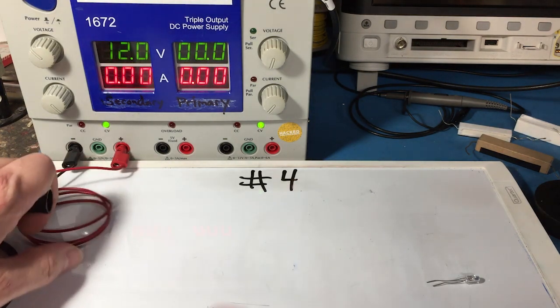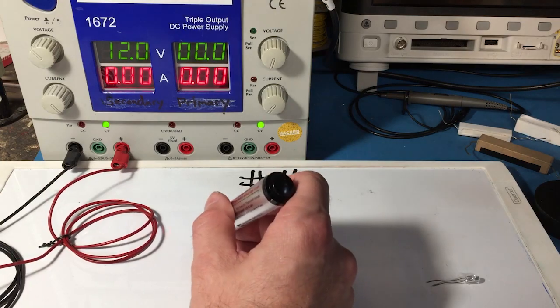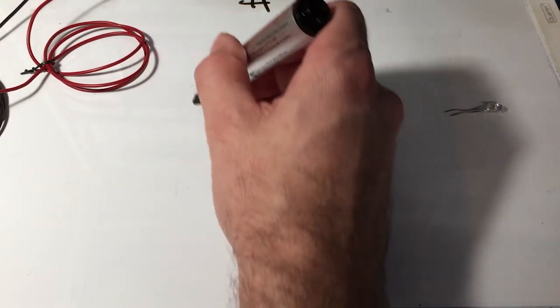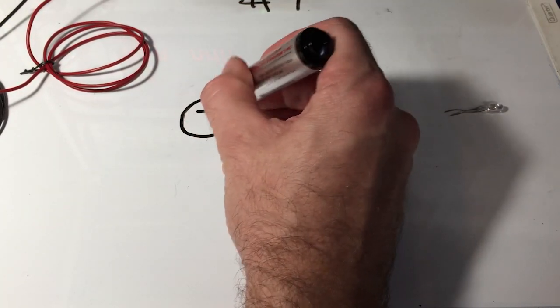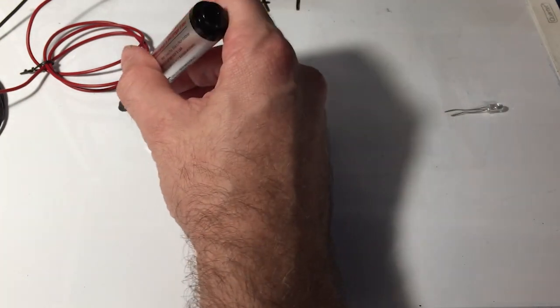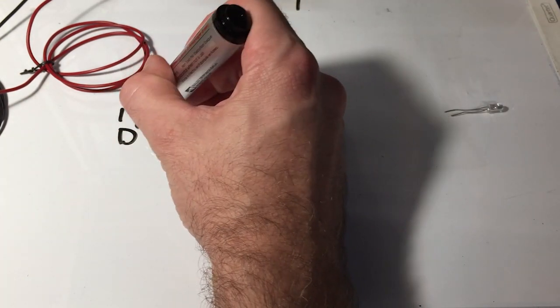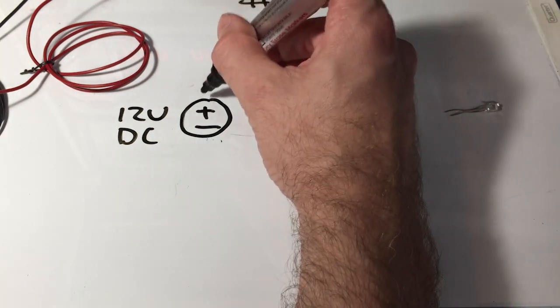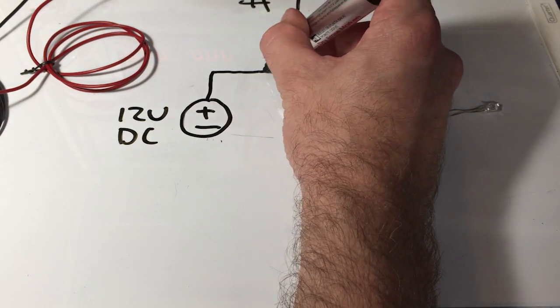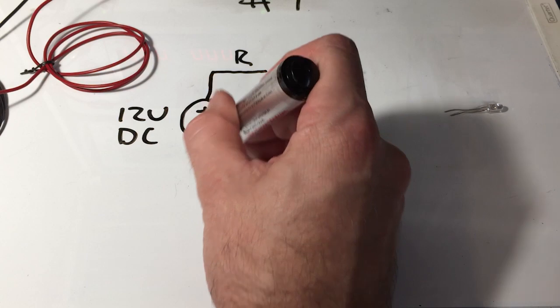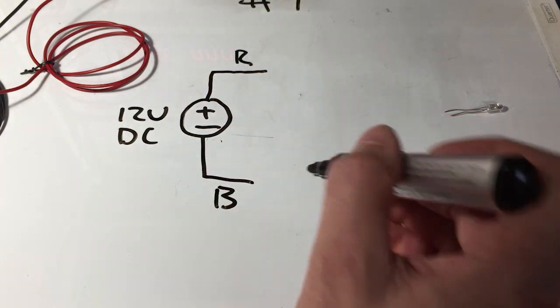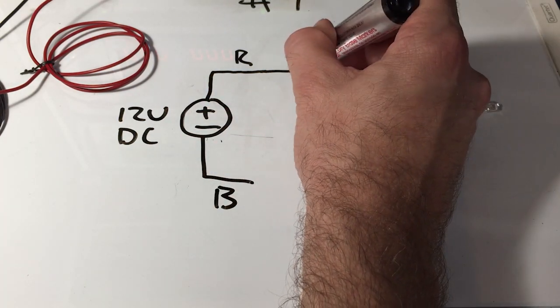The circuit that we just completed looks like this. We have our 12-volt DC power supply. We have to write in the voltage and the type. And then we had the red wire and the black wire.